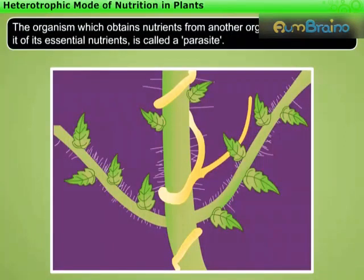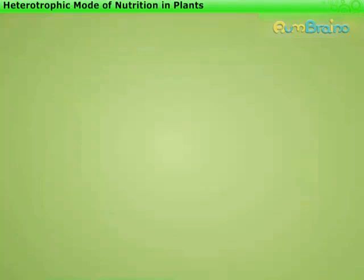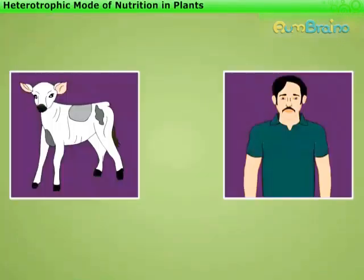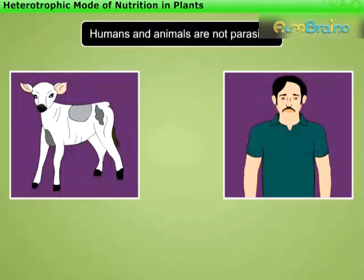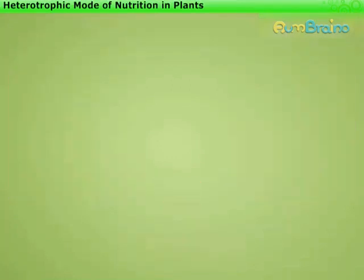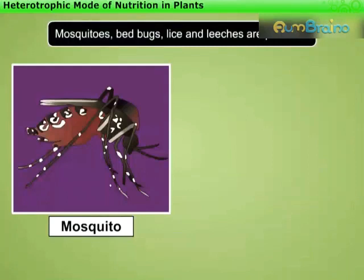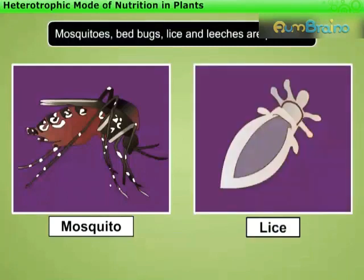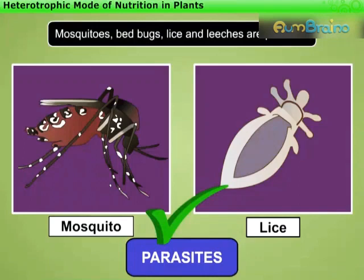A parasite is an organism which obtains nutrients from another organism by depriving it of its essential nutrients. It is interesting to note that although humans and animals depend on plants for their food, they are not parasites. This is because they do not deprive the plants of their essential nutrients the way parasites do.